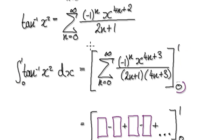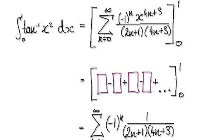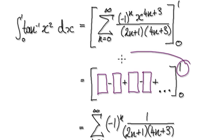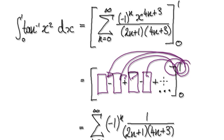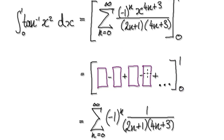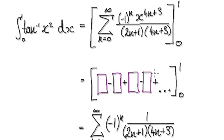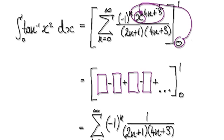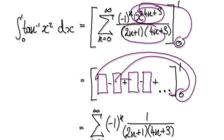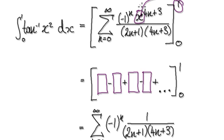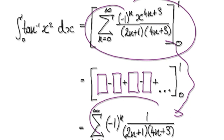We are integrating from 0 to 1, so this is evaluated from 0 to 1. Imagine it as a fraction minus a fraction plus a fraction minus a fraction and so on. You put 1 into each term, then subtract putting 0 into each term. When you put 0 in, zero to any power is zero, so everything is zero. When you put 1 in, one to any power is one. So doing that takes you to the simplified result here.